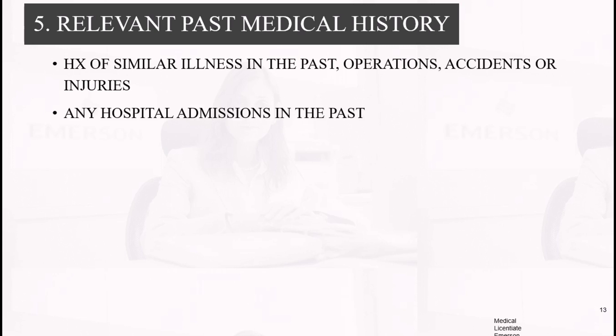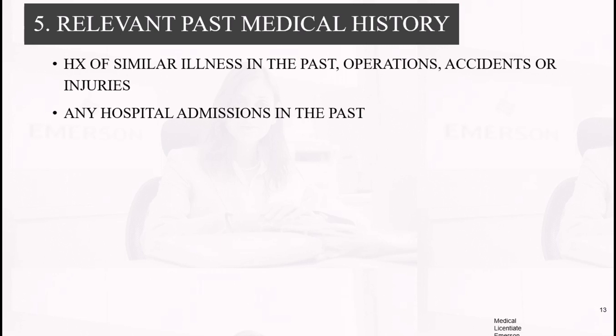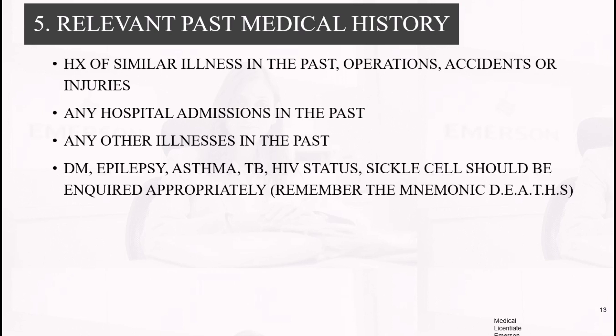Now for the relevant past medical history. Ask if there is any history of similar illness in the past, or operations, accidents, or injuries. Ask about any hospital admissions in the past and any other illnesses in the past. Ask specifically about diabetes mellitus, epilepsy, asthma, TB, HIV status, and sickle cell disease — these should be inquired about appropriately. There is a mnemonic for this: DEATH.